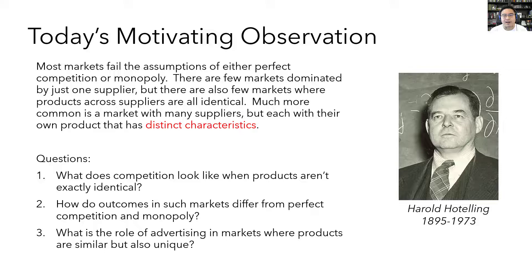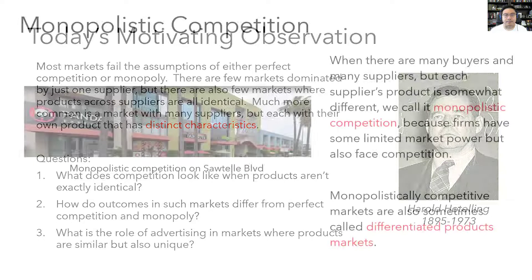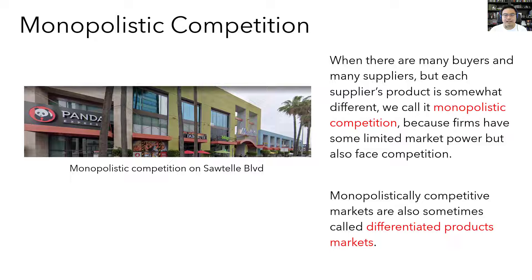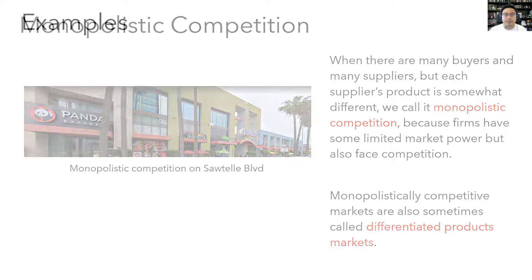The picture on the right here is of the mathematical statistician and economist Harold Hotelling, who developed a lot of the underlying theory that we'll be studying today. So when there's a market with many buyers and many sellers, but products aren't exactly identical and each supplier's product has its own unique characteristics, we call that market structure monopolistic competition. It's called monopolistic competition because the firms are in one sense monopolies and in another sense they're competitors. They're monopolies in the sense that they each control the price and quantity of their own unique product, but they're competitors in the sense that the firm's control is limited, because if a firm wants to raise its price too high, it'll soon find that its customers are switching to an alternate product. Monopolistically competitive markets are also sometimes called differentiated products markets — they mean basically the same thing.